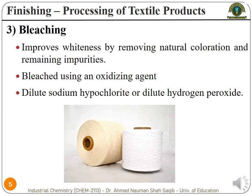After washing with alkali to remove any dirt present on the surface, the next process is to bleach the cotton products. The bleaching process actually improves the whiteness of the material by removing some natural coloration and some impurities which impart color to the cotton fabrics.